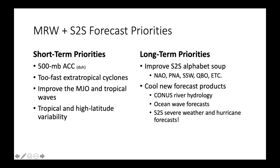Then we also have a set of short-term and long-term priorities we want to address as well. This covers the entire atmosphere — from the tropics, where you want to improve the MJO and tropical waves, to mid-latitudes where you want to improve the 500-millibar ACC and the problem of too-fast extra-tropical cyclones and to improve high-latitude variability. That's the challenge of global modeling — you have to get everything right everywhere — but it is also the opportunity of global modeling as well.